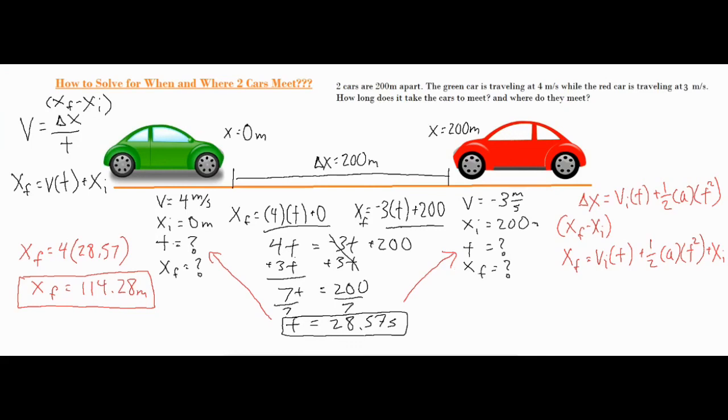And then a lot of the times what you're typically solving for is a time first, and then you can solve for a lot of variables from there. So you want to make sure you rearrange your formulas so they are equal to some kind of final position, so that you can take two formulas and set them equal to one another. And then you would typically solve for a time from there, and then you could plug the time back in to the equation of your choice to find more variables such as the final position.